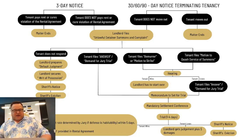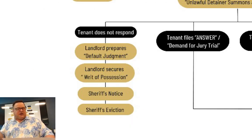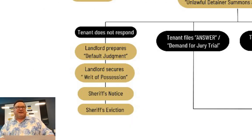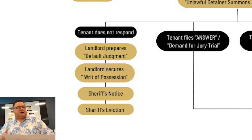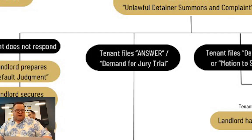Following that line down, there are four different responses. First: tenant doesn't respond. We prepare a default judgment, get a writ of possession after the default judgment, then a sheriff's notice, and then we go to sheriff's eviction. Sheriff's eviction is the sheriff actually knocking on the door — at that point, it's pack your stuff and go.